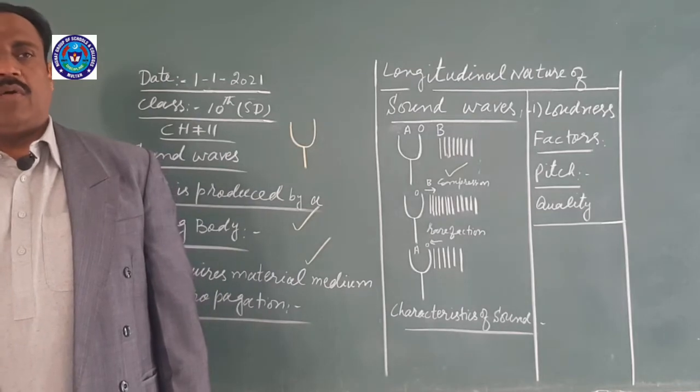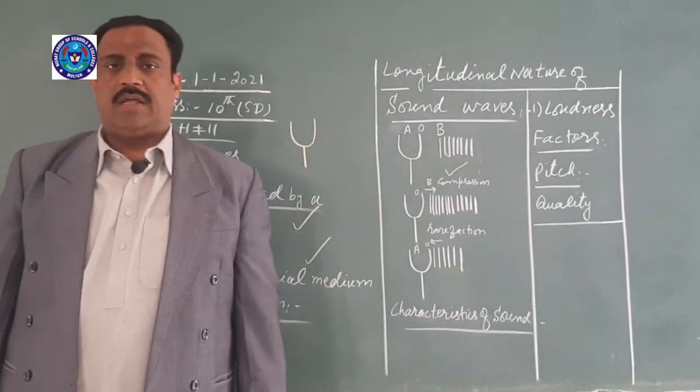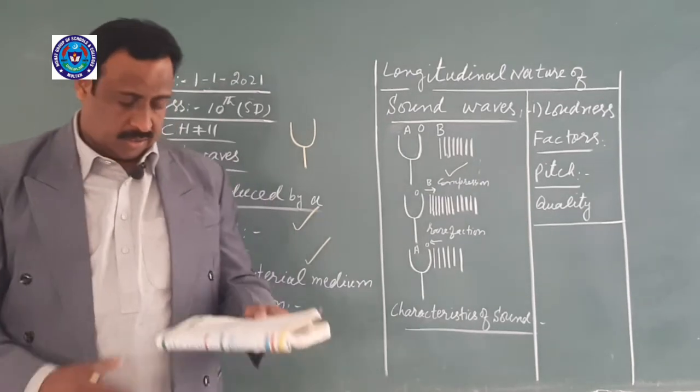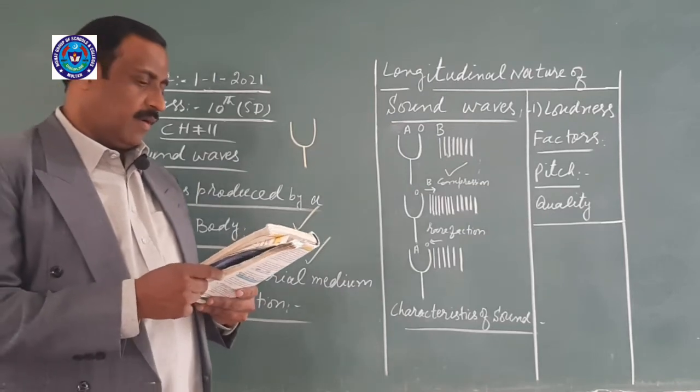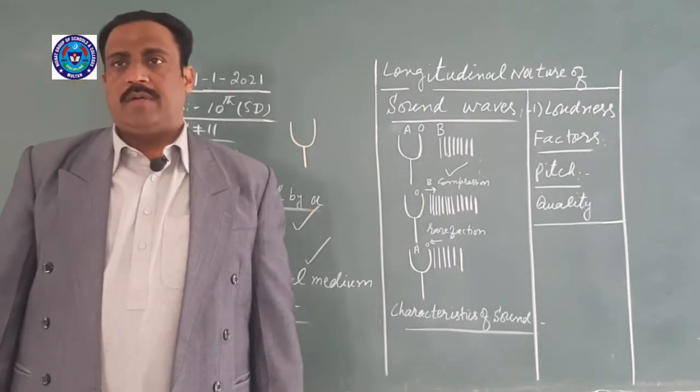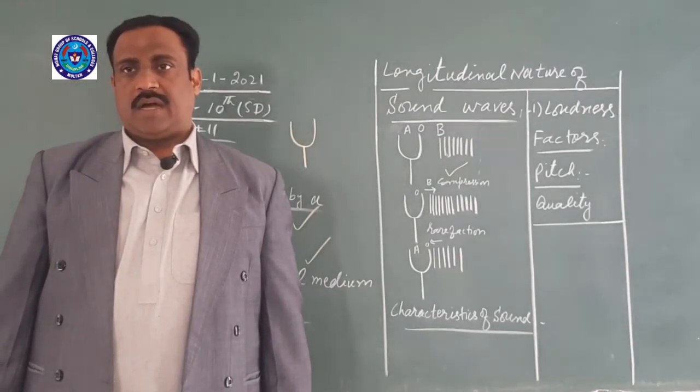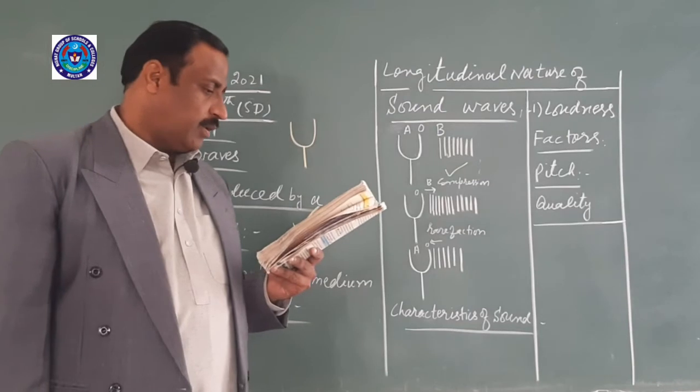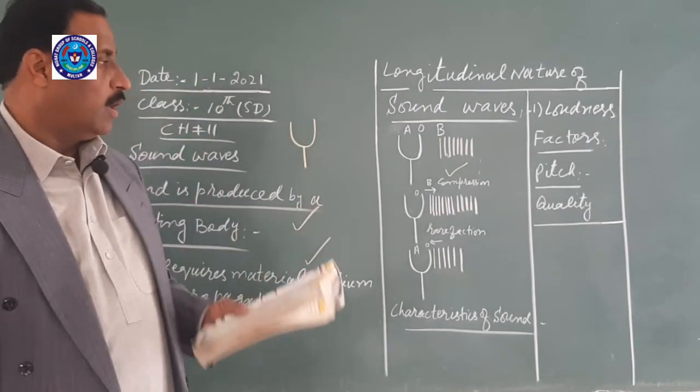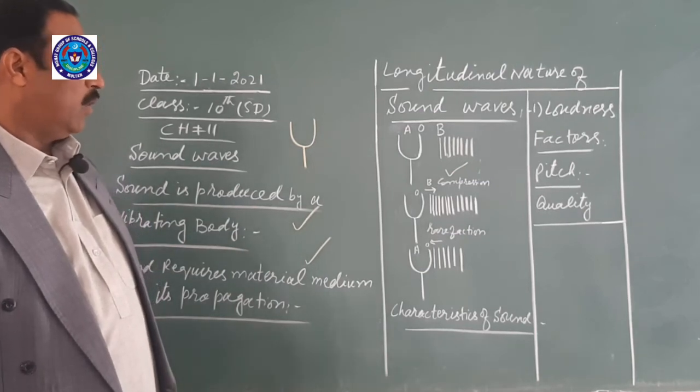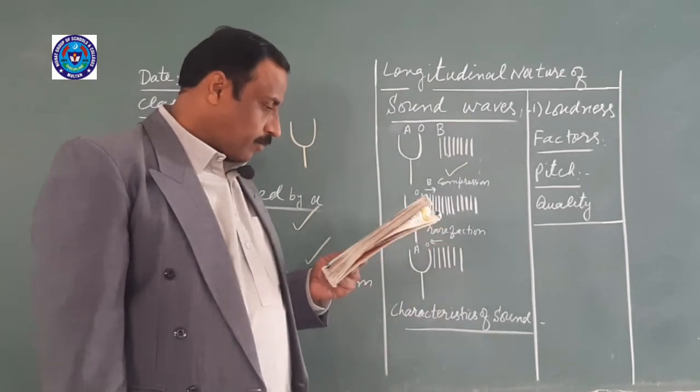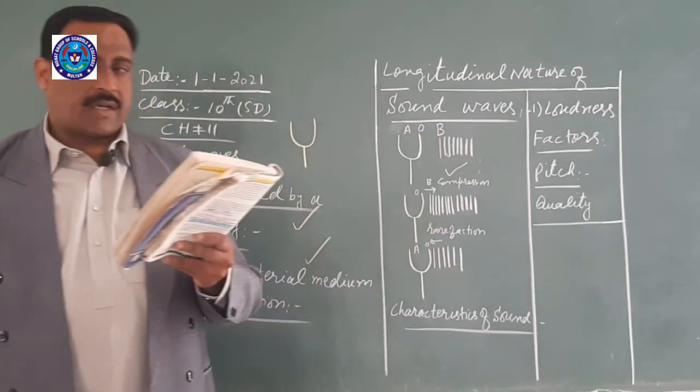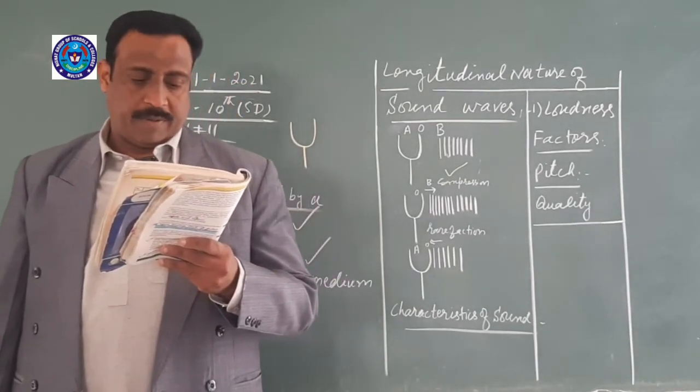The area of the vibrating body affects loudness. A larger area produces more loudness. The school bell has a large area so its sound can travel to a greater distance. The distance from the vibrating body also affects loudness - as distance increases, loudness decreases. Quality is the characteristic by which we can distinguish between two sounds of the same loudness and pitch.